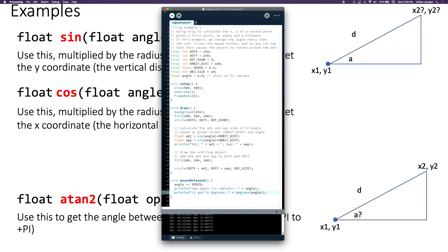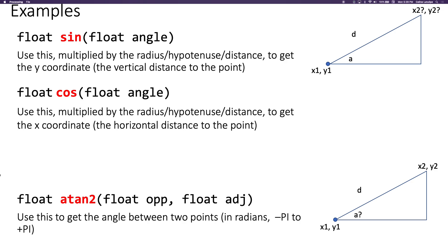That's the first example. Now let's look at the second example: when we have two points x1 y1 and x2 y2, we can easily calculate the distance between them using Pythagoras' theorem — Processing has a built-in distance function for that — but then we need to get the angle, and that's where we use atan2. Let's look at an example of that.